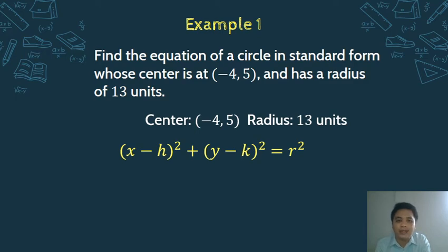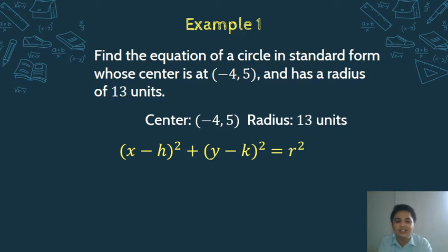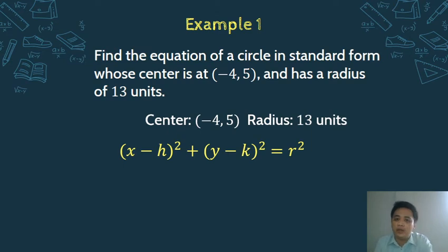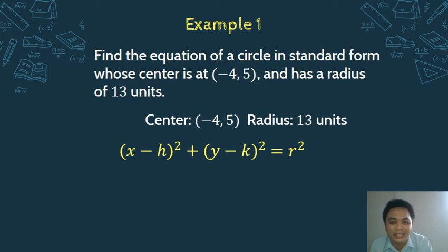Let us recall the standard form of a circle: the square of (x minus h) plus the square of (y minus k) equals r squared. Now, from your center, what is the value of h? That's negative 4. How about k? That's 5. And the radius r equals 13. So now you have h = -4, k = 5, and r = 13. You can now substitute.